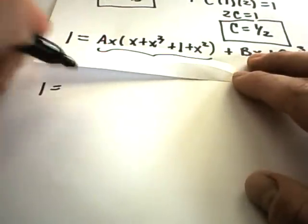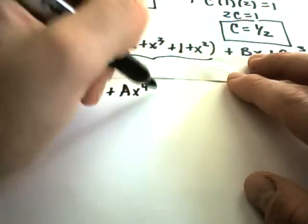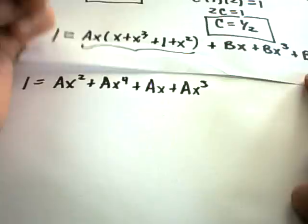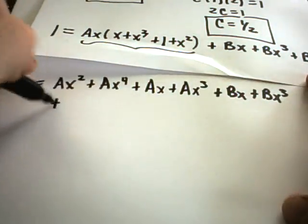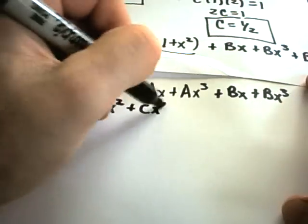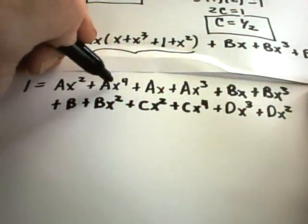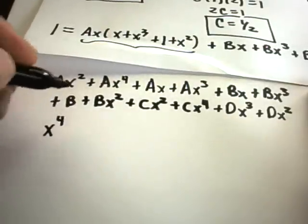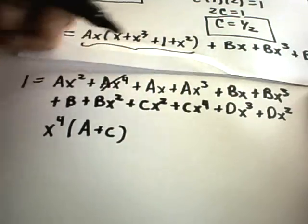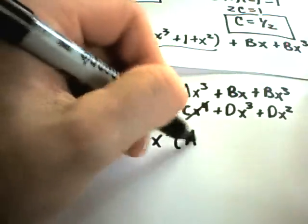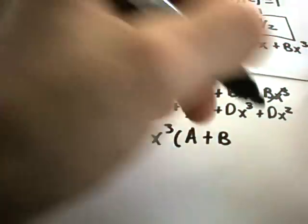Now combining like terms: 1 equals ax to the fourth plus ax cubed plus ax squared plus ax, plus bx plus bx cubed plus b plus bx squared, plus cx squared plus cx to the fourth, plus dx cubed plus dx squared. Collecting x to the fourth terms gives (a plus c)x to the fourth. Collecting x cubed terms gives (a plus b plus d)x cubed.